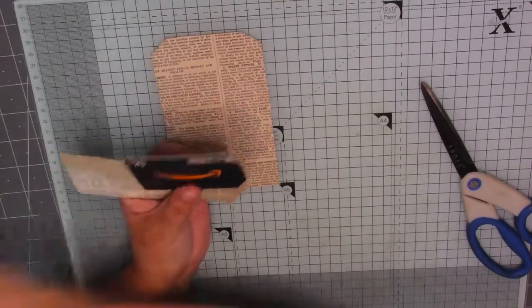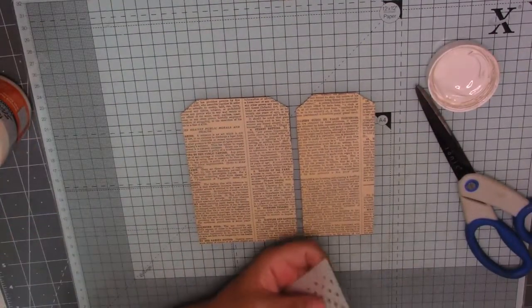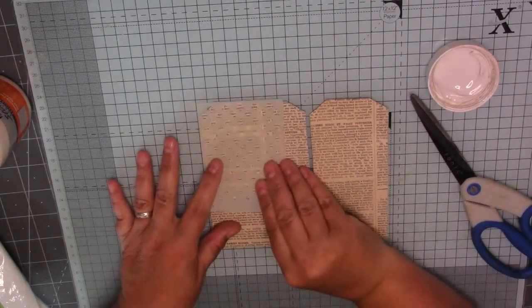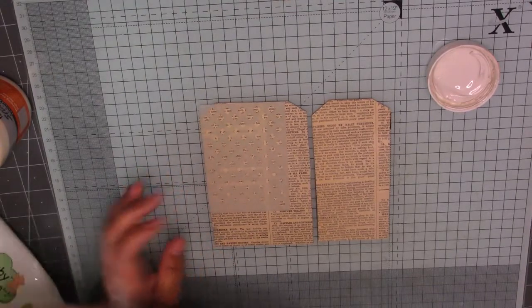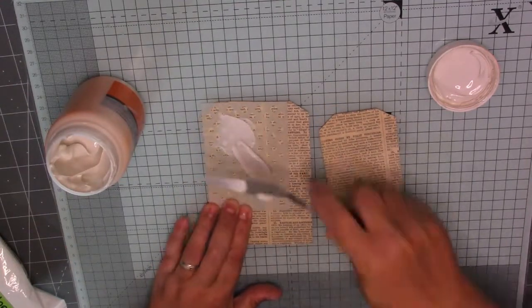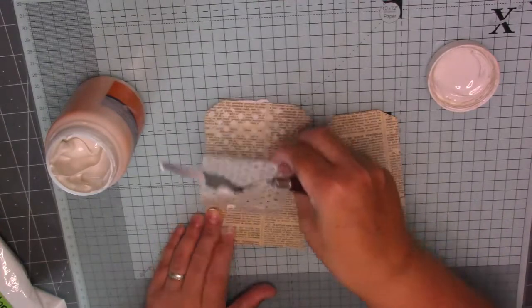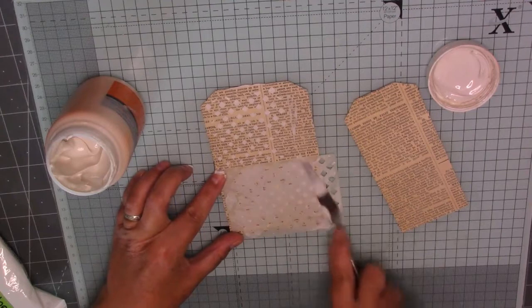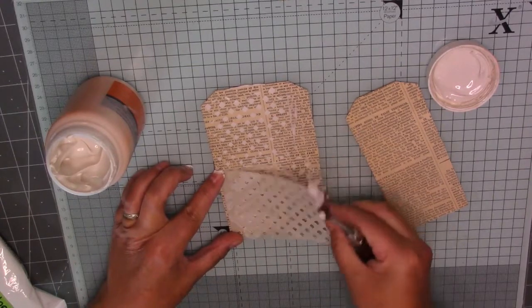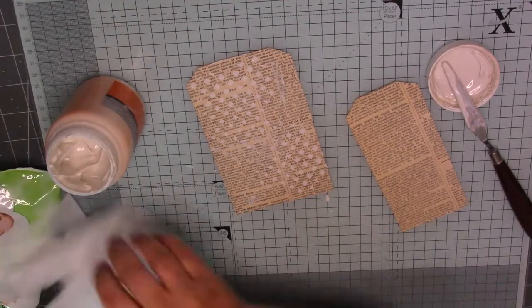Right, what I'm going to do now is I've got some texture paste. And I've got two stencils. Let me just grab my wet wipes out and then I can wipe the stencils over. I've got two stencils. I'm going to do some stenciling onto these tags. So, where's my palette knife? This is just Pebeo modelling paste. It's just took me hubby half an hour to get the lid off it. The lid was just stuck fast.